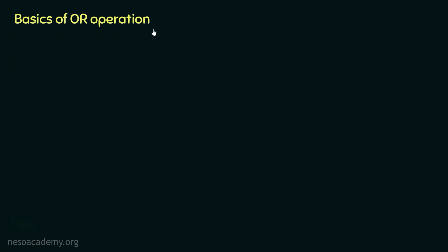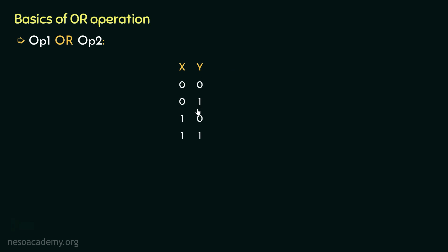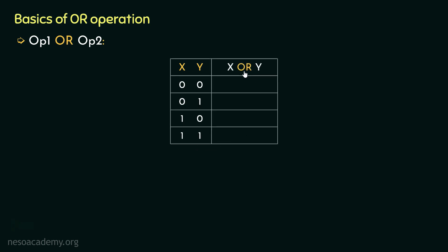Let's now focus on the basics of OR operation. Just like AND, OR is also a binary operation. So let's suppose we have got two binary inputs, X and Y. With two inputs, there will be four different sequences: 00, 01, 10, and 11. Now if we perform X OR Y — the output will be 1 if X or Y is 1. In the first case, both inputs are 0s, so since none of them are 1s, the output is 0. In the rest of the cases, either Y is 1, or X is 1, or both are 1s — so for these three, the outputs are always 1s.